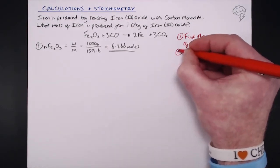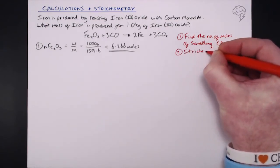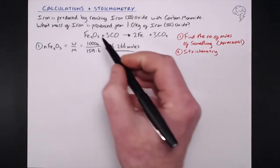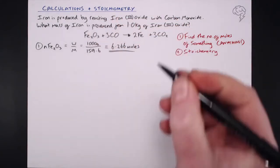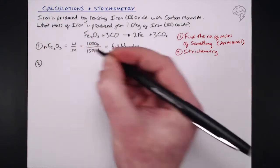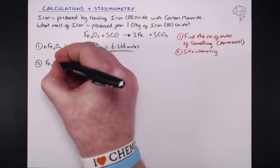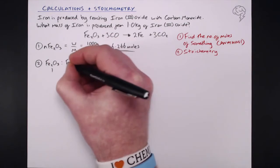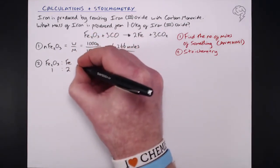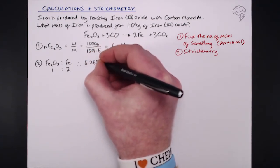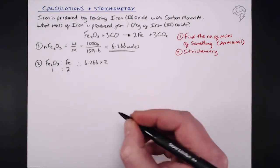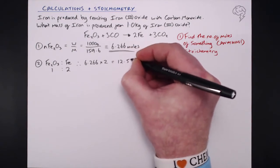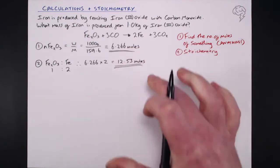Step two is stoichiometry, where we use the balanced equation to find the number of moles of another substance. The ratio between Fe2O3 and Fe is 1:2. Therefore, 6.266 moles of Fe2O3 will give us twice as many moles of iron: 6.266 × 2 = 12.53 moles of iron produced.